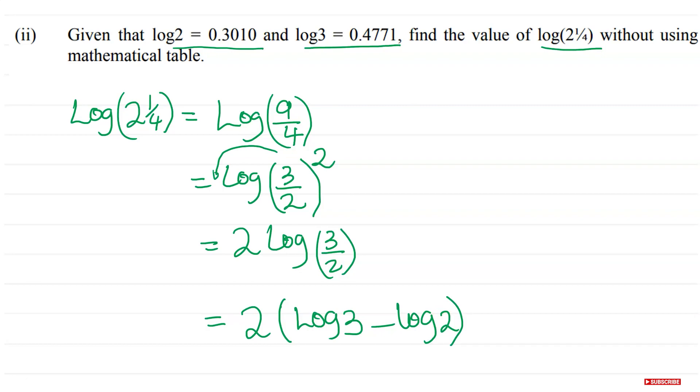It is now almost done. Log(2¼) is now going to be equal to 2 outside, and in my bracket I have log 3, which is 0.4771, and I need to take away log 2, which is 0.3010. If you subtract, you will get 2 times 0.1761, and your final answer is going to be equal to 0.3522. This is your final answer for part b(ii).